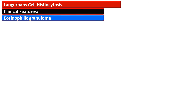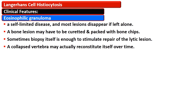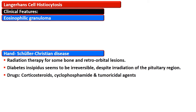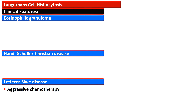Regarding clinical features and treatment: eosinophilic granuloma is a self-limited disease; bony lesions can be curetted and packed with bone chips, and sometimes biopsy alone stimulates repair of the lytic lesion. Collapsed vertebrae may reconstitute itself over time. Hand-Schüller-Christian disease can be treated with radiation therapy for bone lesions, especially retroorbital lesions; diabetes insipidus is usually irreversible. Other drugs used include corticosteroids, cyclophosphamide, and various antitumor agents. Letterer-Siwe disease requires aggressive chemotherapy.